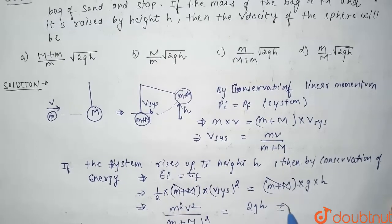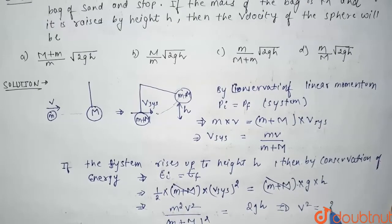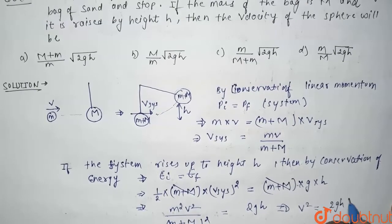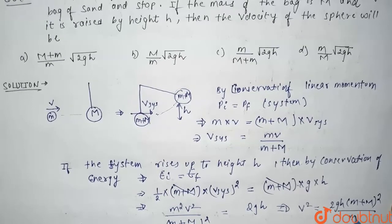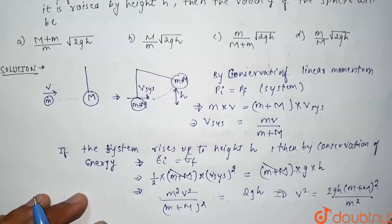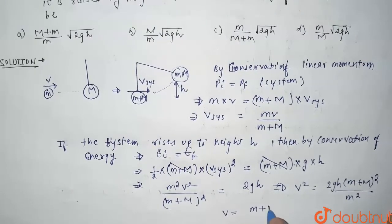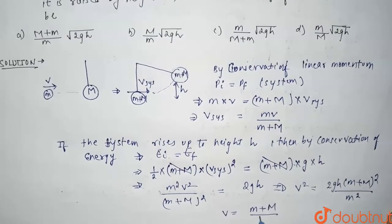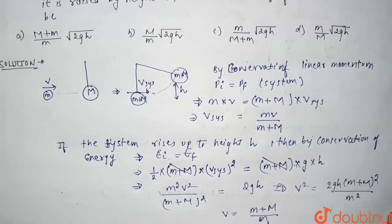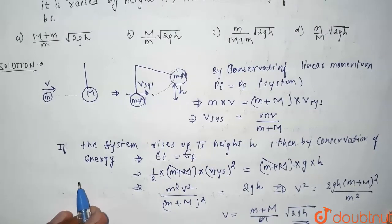So from here, v_system squared equals 2gh, and substituting back: m squared v squared divided by (m plus capital M) squared equals 2gh. Therefore, v equals (m plus capital M) divided by m, times the square root of 2gh. So the correct option is option A. Thank you guys.